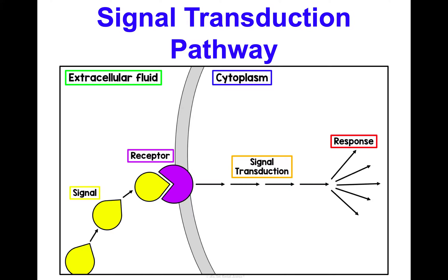Here is a diagram showing what I'm talking about. This yellow molecule would be my ligand — some sort of signal. This is extracellular fluid, and this is cytoplasm, so we can infer that this gray line is our cell membrane. We have a receptor protein in the cell membrane that's going to receive that signal. When that happens, these arrows show that signal getting passed along until we get whatever response it is that we desire.